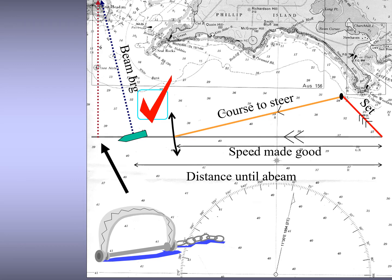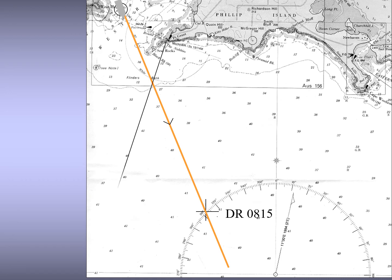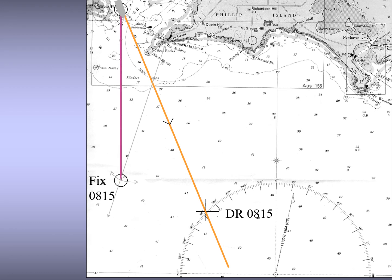Now let's look at how you determine the direction of current from observed positions. Say a ship is at a known position at about 08:00, and you intend to reach the cross — your dead reckoning or estimated position — by 08:15, after 15 minutes. But when you plot the ship's actual position after 15 minutes using a range and bearing of a lighthouse, you find the ship has not reached the expected cross but has reached a different position.